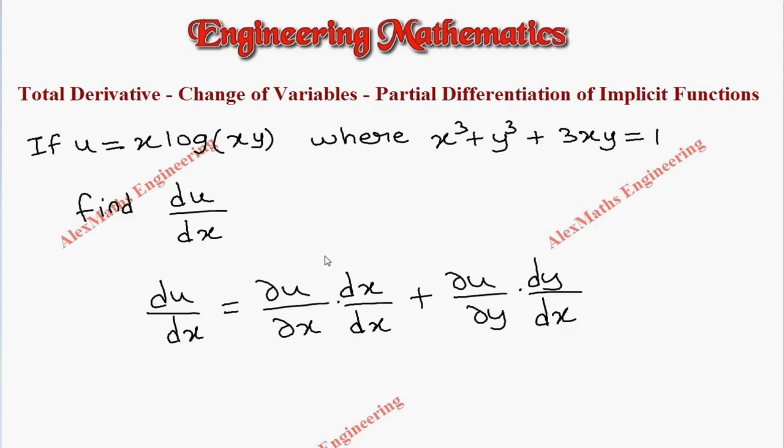Since this part is 1, we usually don't write it. So we have the formula du by dx equals partial u by partial x plus partial u by partial y into dy by dx.